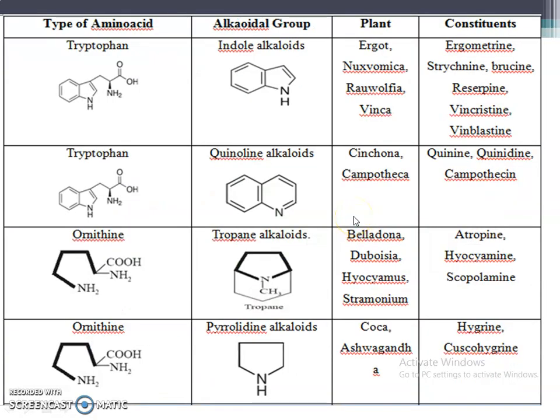Now, another classification covers only true alkaloids - based on which amino acids are responsible for their synthesis. This table is most important because in every GPAT exam at least one question is asked from it. In the 2021 GPAT, two questions were asked from this table alone. Let's learn this carefully.